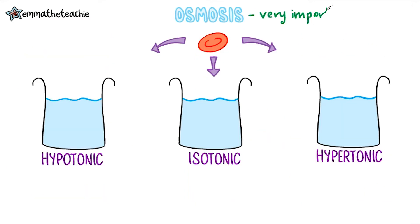Osmosis is important in animal cells for making sure that the solutes, like glucose and salts, are at the right concentration inside the cell. This internal environment needs to be kept just right for the cell to work. The difference in concentration between the cell's internal environment and the solution outside it will determine how much osmosis occurs. We're going to look at what happens when a red blood cell is put into three solutions that have different concentrations.